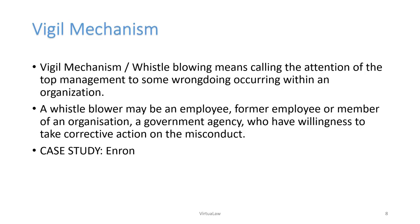The best case study for the vigil mechanism is Enron. Enron was a major conglomerate in the US operating across almost all businesses. When it was expanding into broadband services, there was a feeling within the organization that the company was not doing well. A senior vice president made it open to the board of directors that the company was concealing something and could not afford a new business. After this whistleblowing, the entire company crashed and it became a major scandal in the USA.